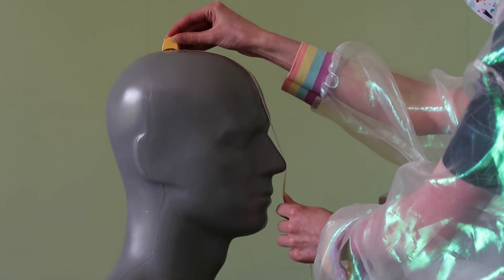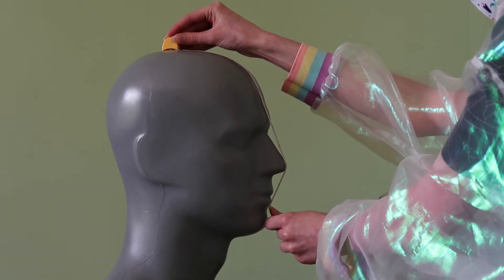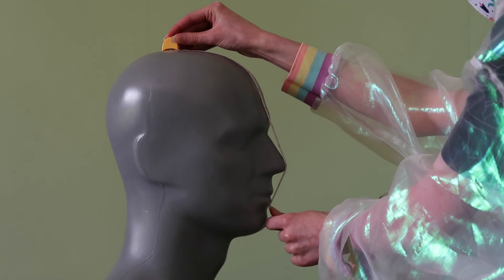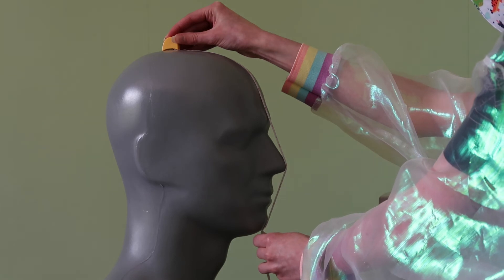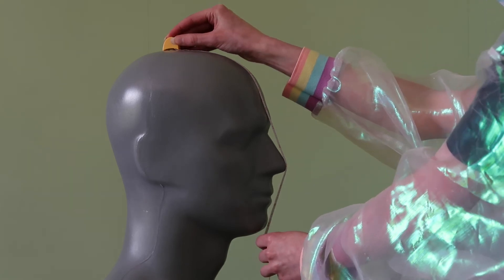Then we run the tape measure down to the bottom lip, which is 11 inches on this mannequin, and then to the bottom of the chin, which is 12.5 inches.